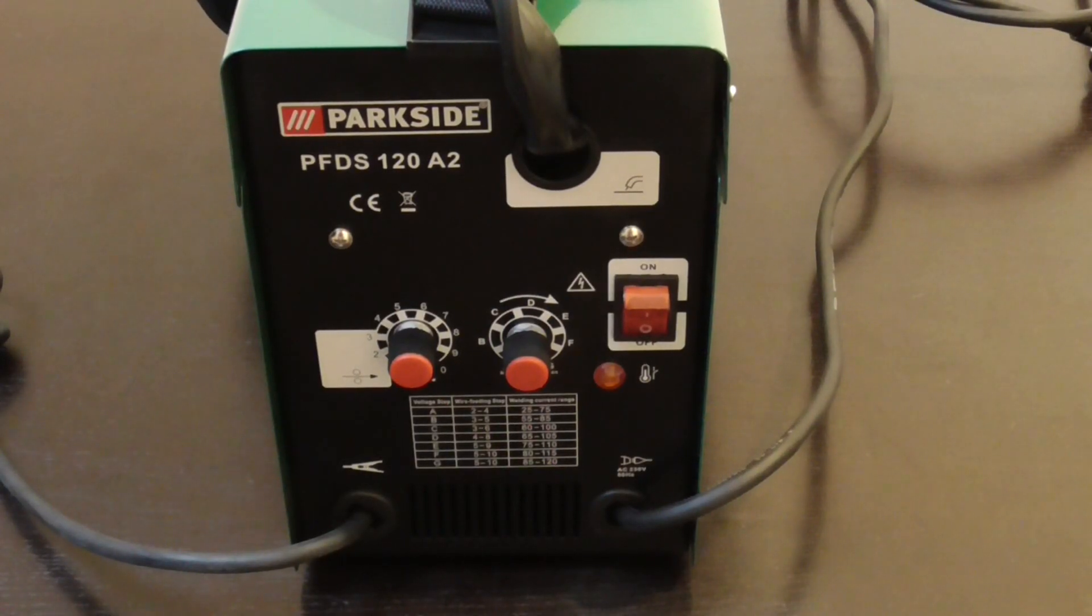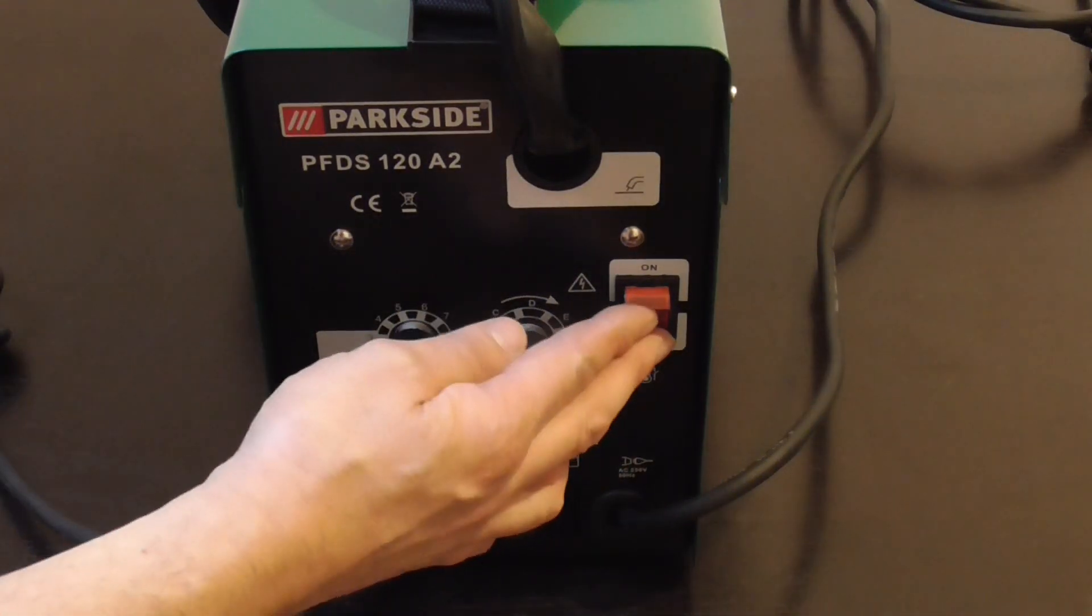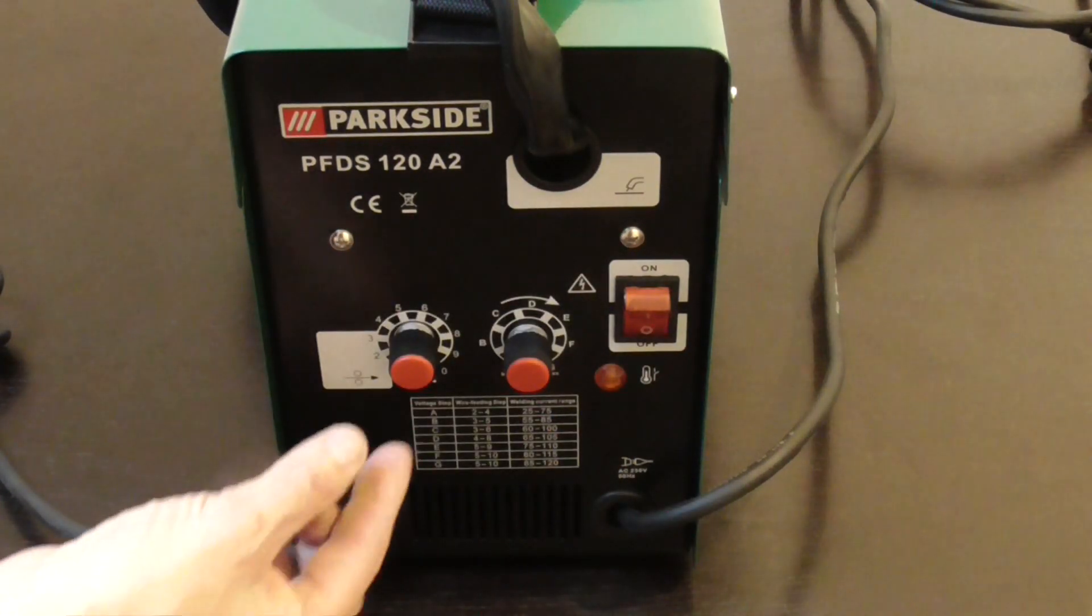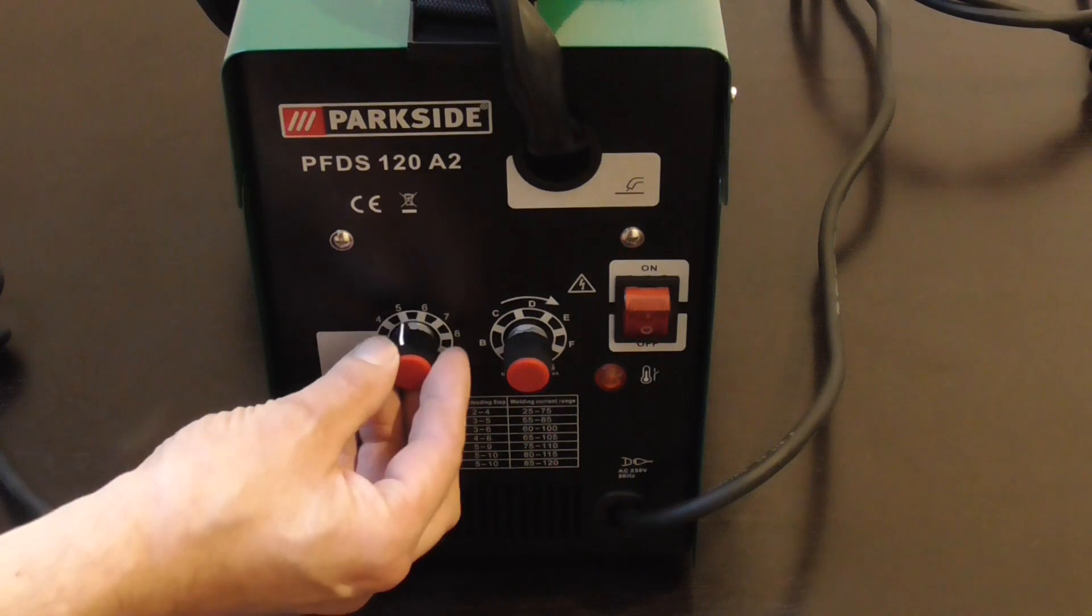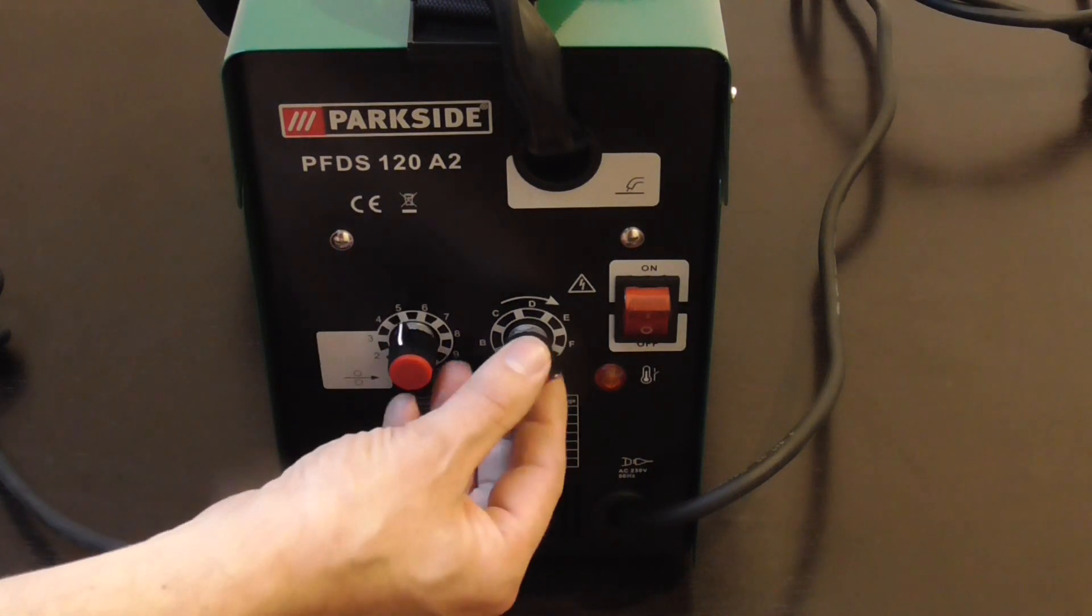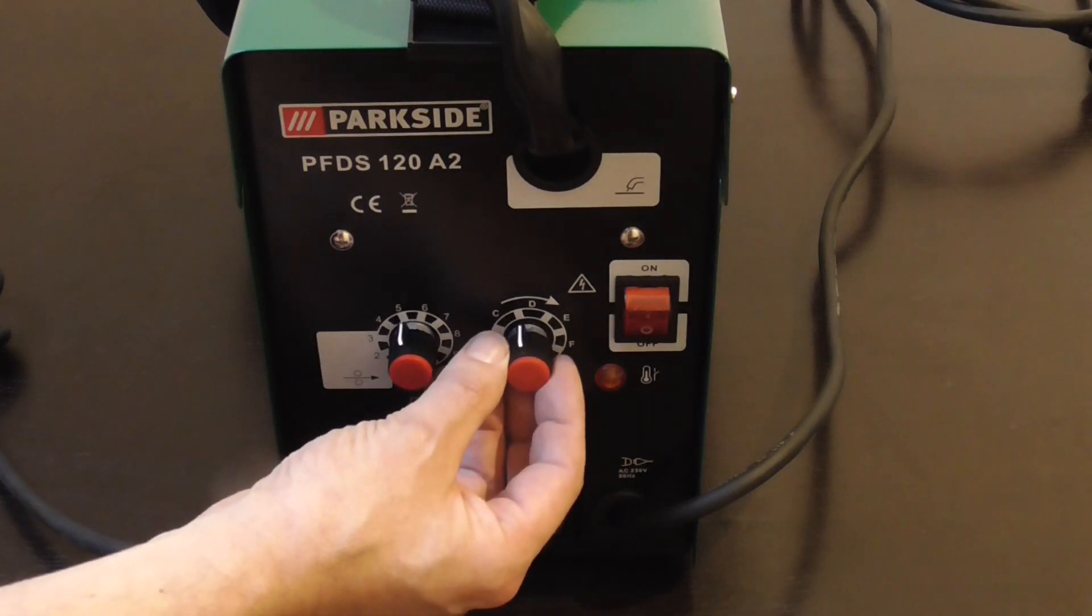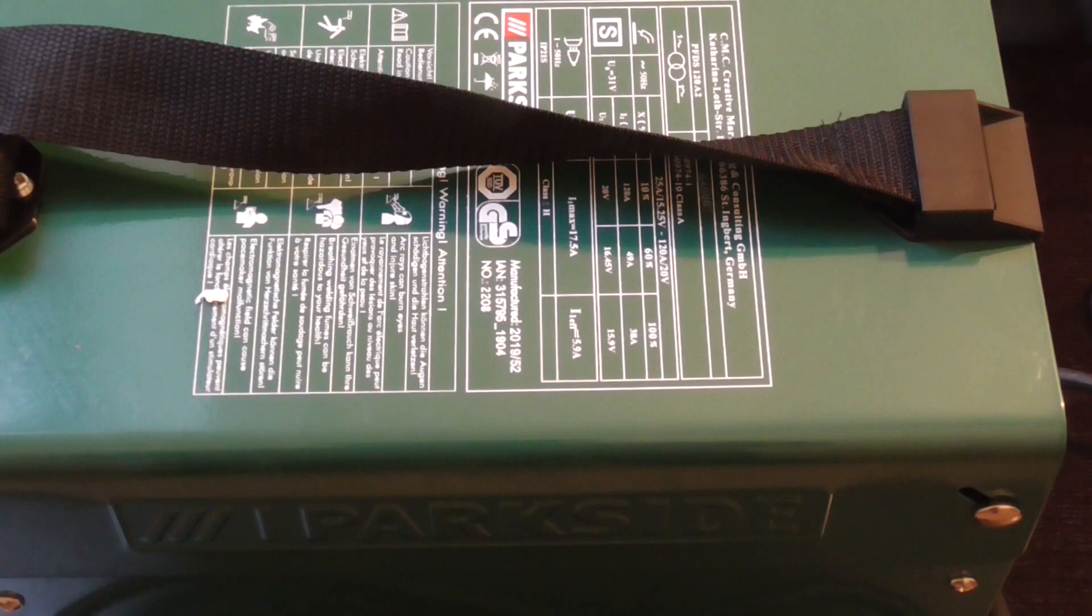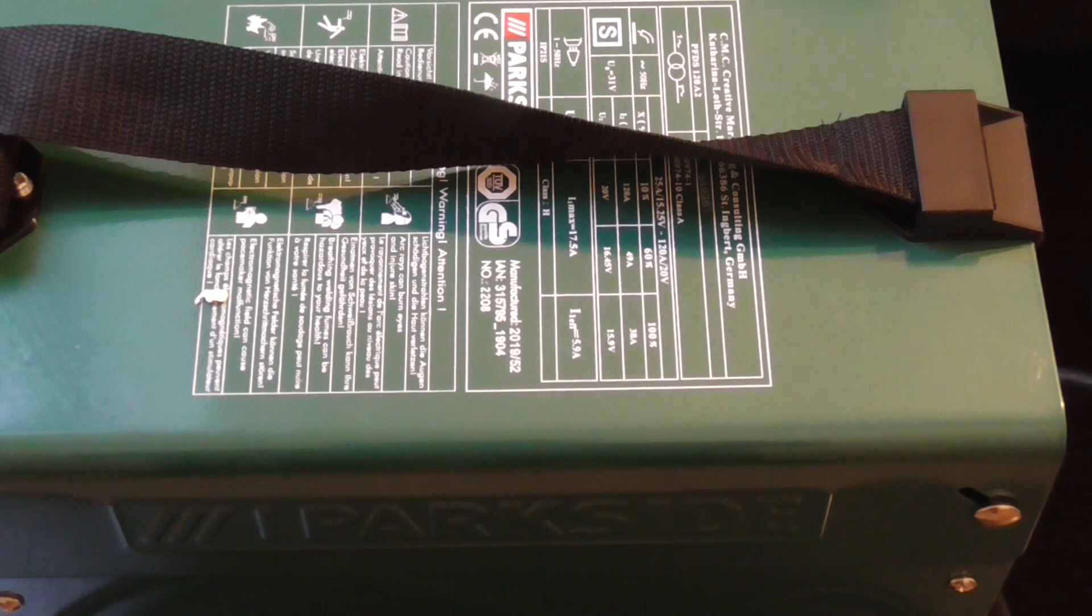So on the front of the welder we have the on-off switch here, we have the wire feed here, and we have the amperage on this side. So we'll just open up the welder and see what it looks like inside.